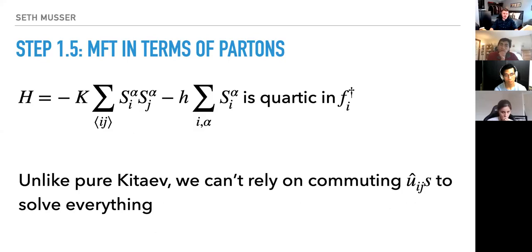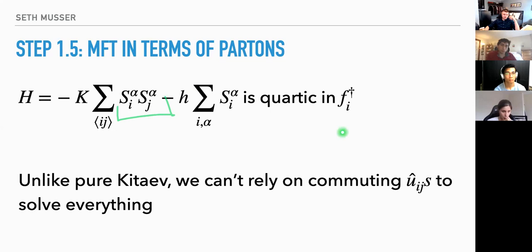Now let's think about the mean field theory in terms of partons. We're in the phase where all K's are equal, with h in the [111] direction. The interaction is quartic: quadratic in spins means quartic in complex fermions. Unlike the pure Kitaev model, introducing this magnetic field destroys all the nice commutativity and we can't rely on the link variables to solve everything exactly.